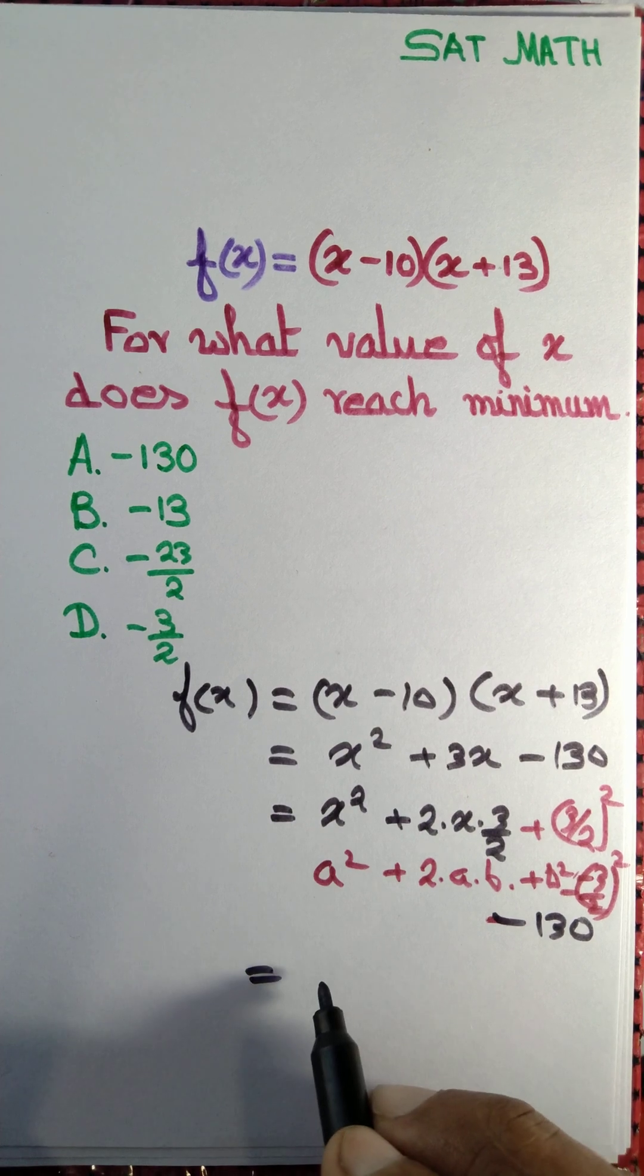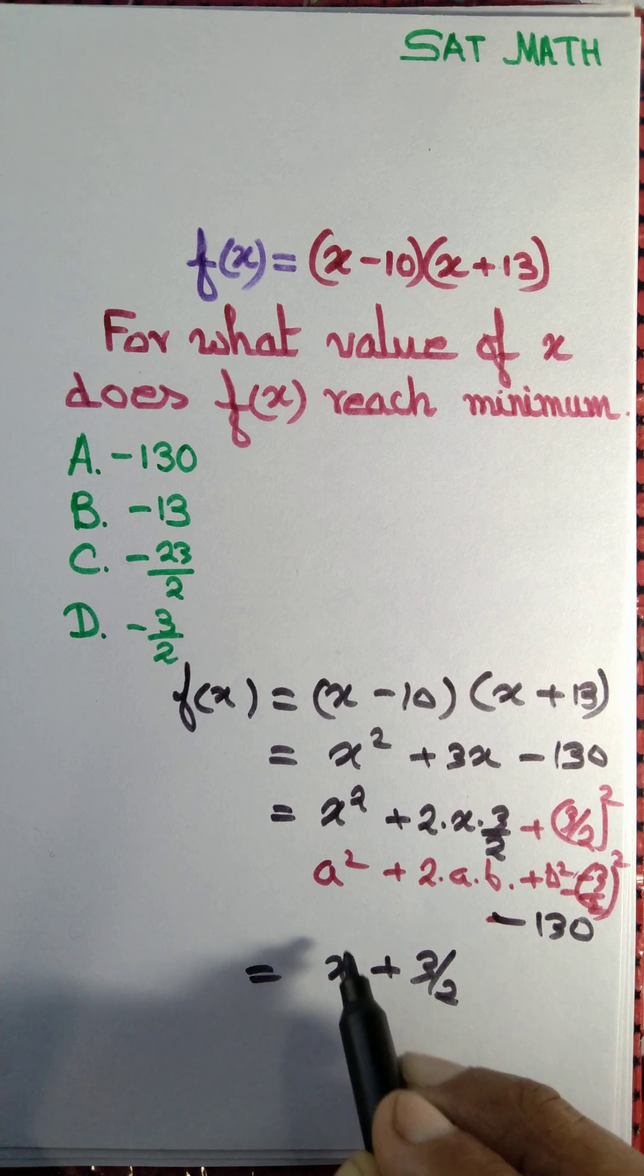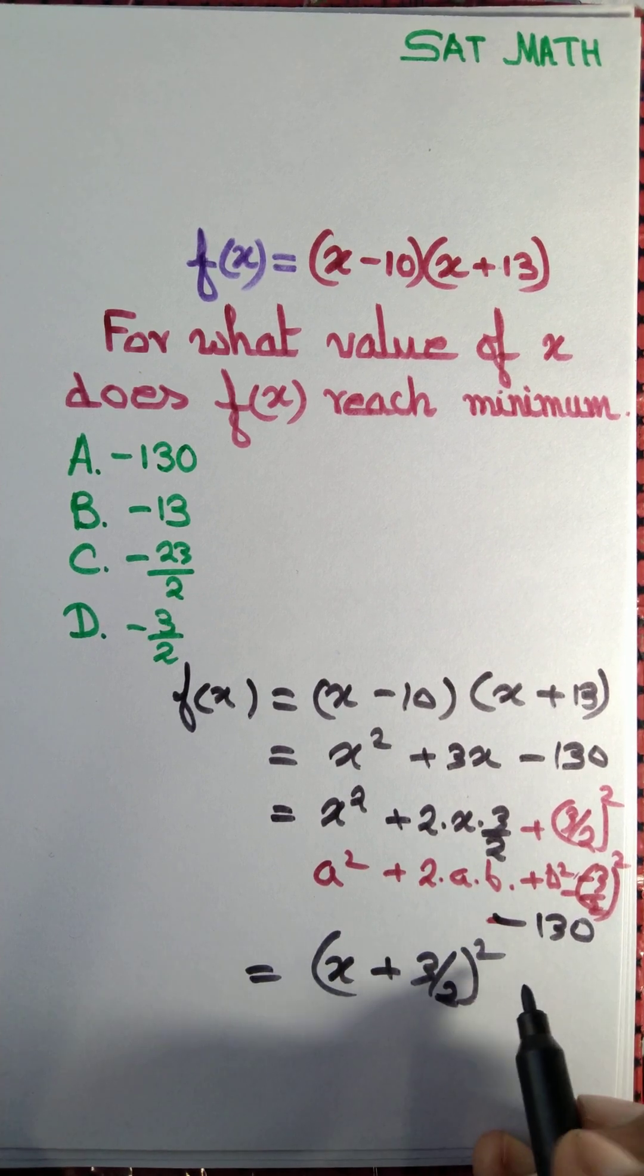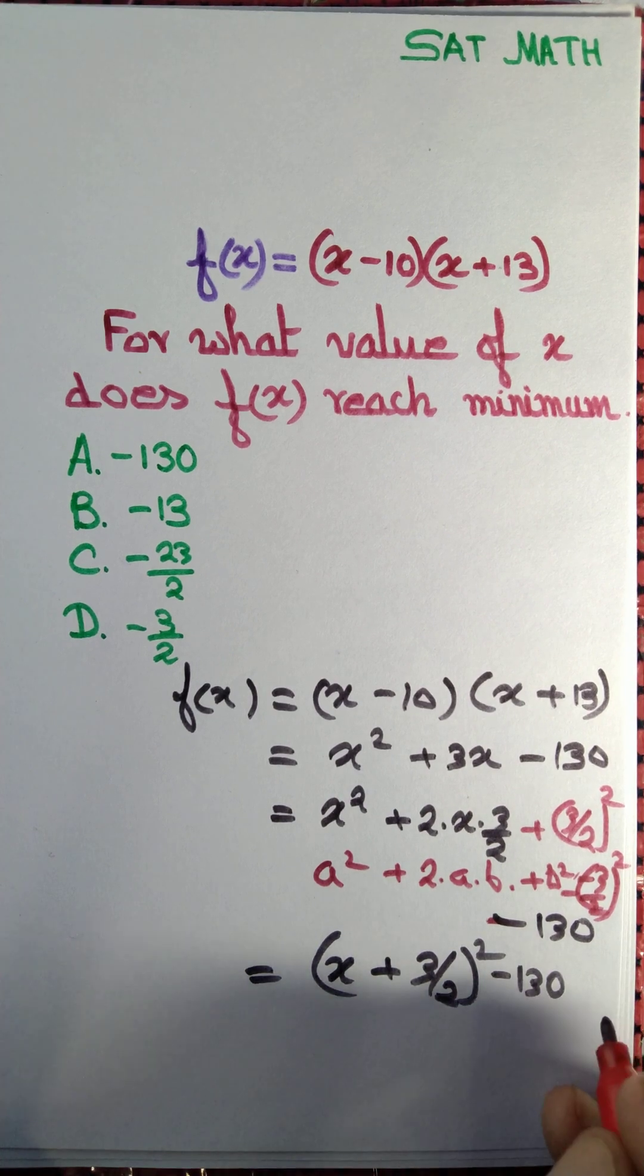And we can write it as (x + 3/2)². The rest of the expression, minus 130, we can copy as it is, minus 9/4 we can copy as it is, minus 9/4.